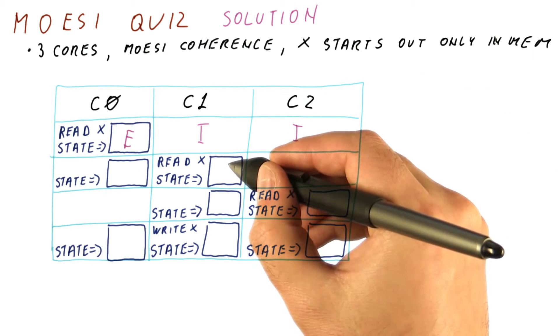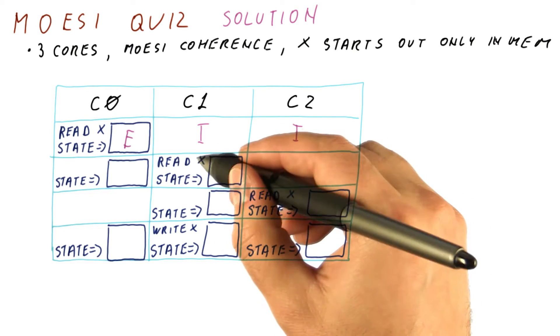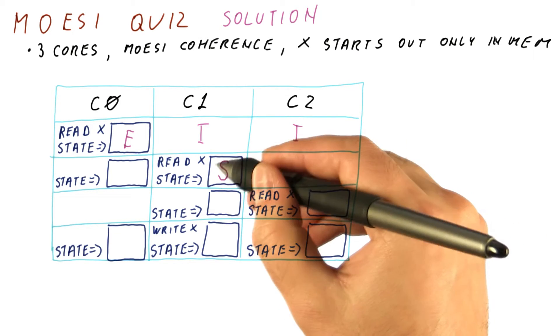When C1 reads, it detects that it's not the only one who has the block, so it goes to the S state.